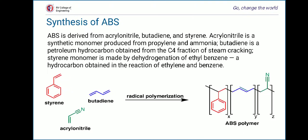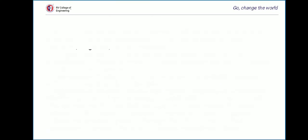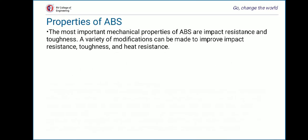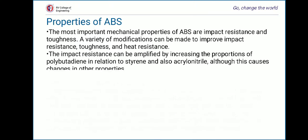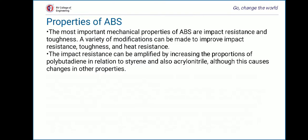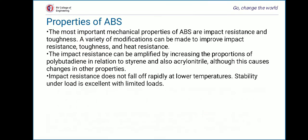Moving on to the properties of ABS. The most important mechanical properties of ABS are impact resistance and toughness; a variety of modifications can improve these as well as heat resistance. Impact resistance can be amplified by increasing the proportion of polybutadiene relative to styrene and acrylonitrile, although this causes changes in other properties. Impact resistance does not fall off rapidly at lower temperatures, and stability under load is excellent with limited loads.